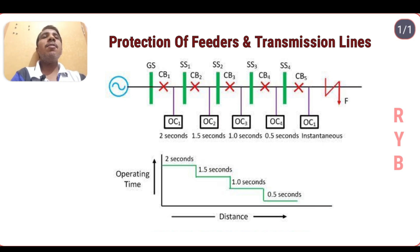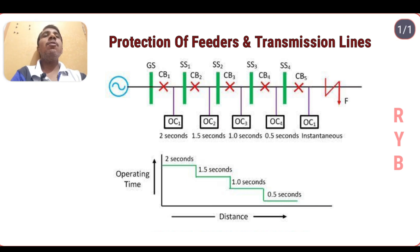The operating time of the relay associated with line protection should be as minimum as possible in order to prevent unnecessary tripping of circuit breakers associated with other healthy parts of the power system. These requirements make protection of transmission lines much different from protection of transformers, alternators, and other equipment.